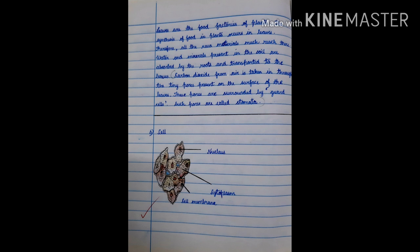The synthesis of food in plants occurs in leaves. Therefore, all the raw materials must reach there. Water and minerals present in the soil are absorbed by the roots and transported to the leaves. Carbon dioxide from air is taken through the tiny pores present on the surface of the leaves. These pores are surrounded by guard cells. Such pores are called stomata.